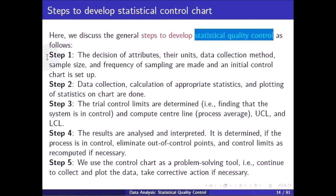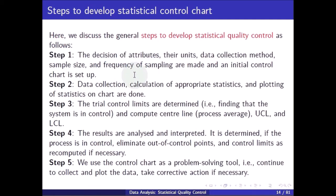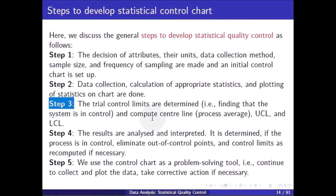The general steps to develop statistical quality control are as follows. Step 1: decide on attributes, their units, data collection methods, sample size, and frequency of samples, and set up an initial control chart. Step 2: collect data, calculate appropriate statistics, and plot them on the chart. Step 3: determine trial control limits and compute the central line, UCL, and LCL. Step 4: analyze and interpret the results — determine if the process is in control and recompute limits if necessary.